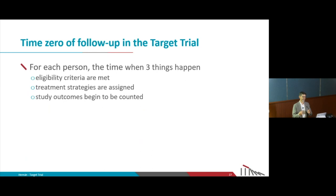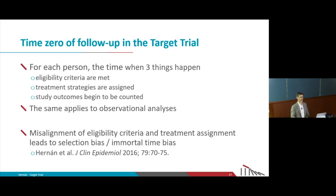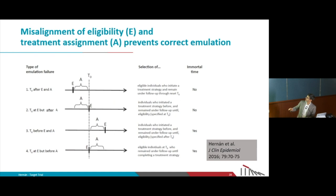The same thing should happen in an observational analysis that emulates a target trial. What is true for a randomized trial is also true for observational analysis. The problems we see in observational analysis for causal inference is that these two things — eligibility and assignment to treatment — are not aligned for some people.